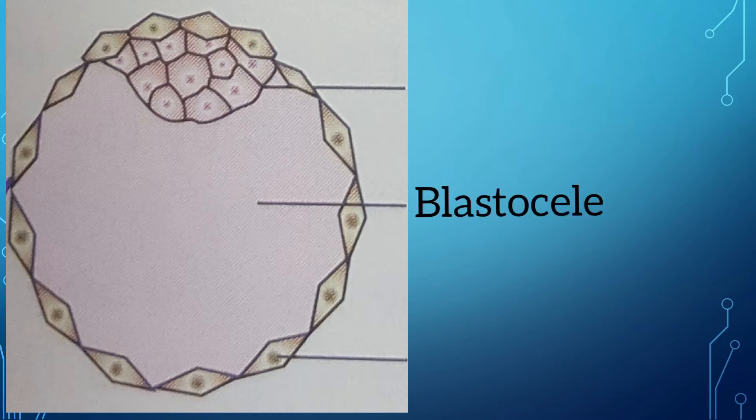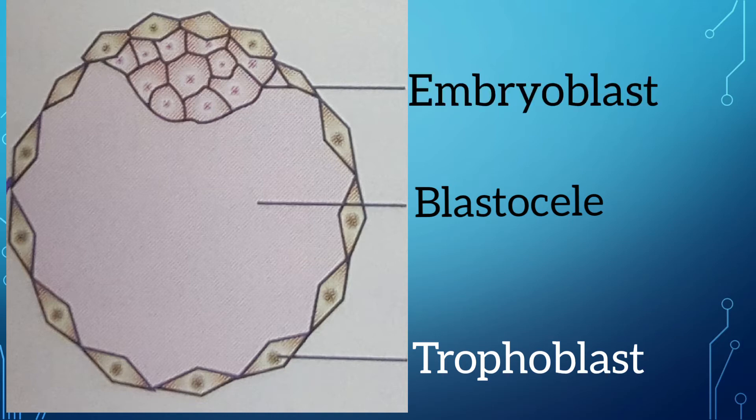This stage of embryo is called the blastocyst. The blastocyst has an outer layer of cells called trophoblast and an inner cell mass called embryoblast. This embryoblast gives rise to the embryo and the trophoblast provides nutrition to the embryo.